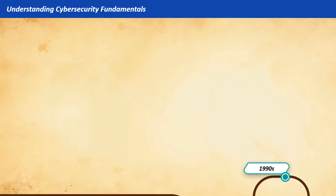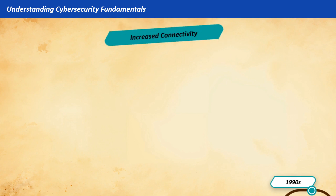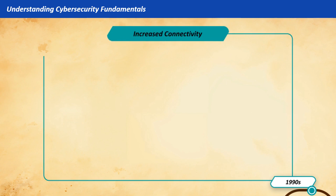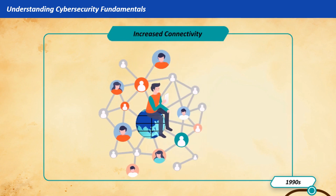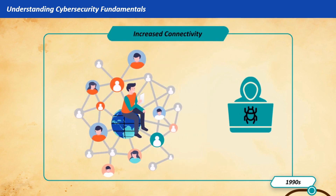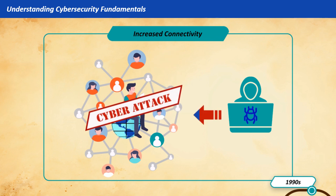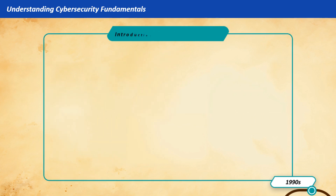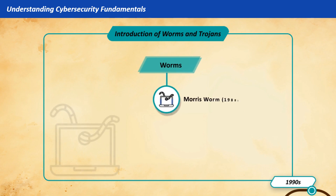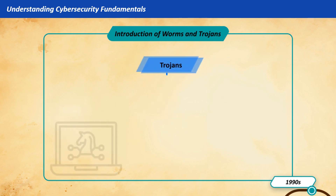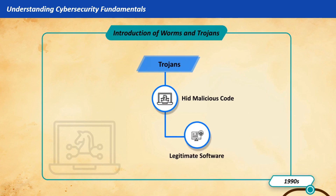Rise of the Internet — 1990s. The rise of the Internet improved connectivity, giving cybercriminals more opportunities to attack. This era saw the rise of advanced threats like the Morris worm (1988), which took advantage of weaknesses in Unix systems. Trojans hid malicious code within legitimate software.